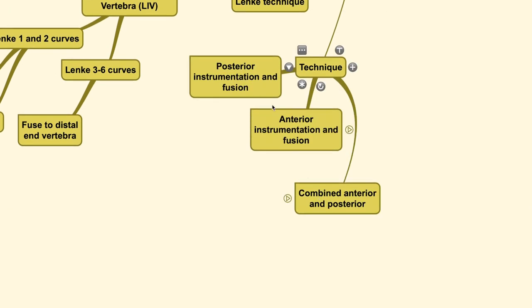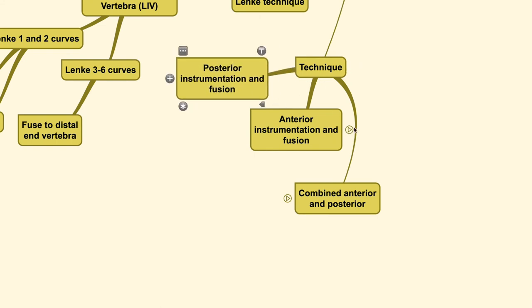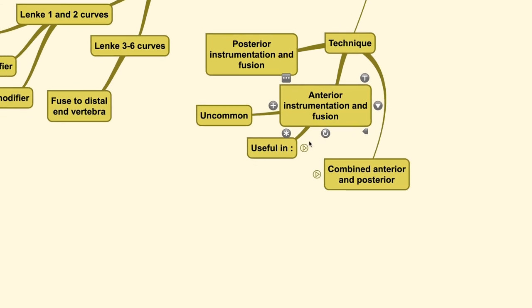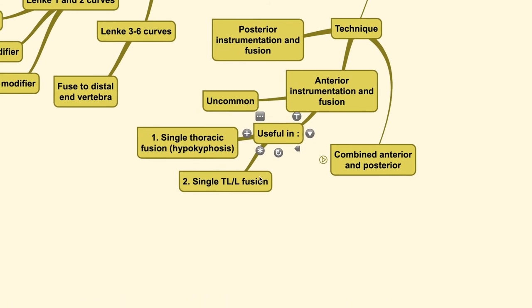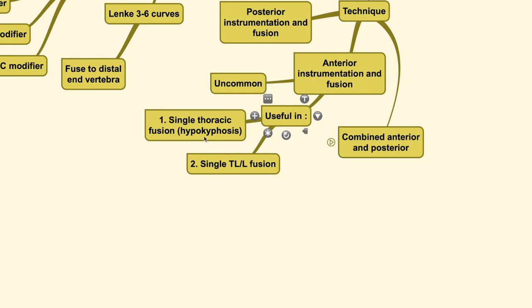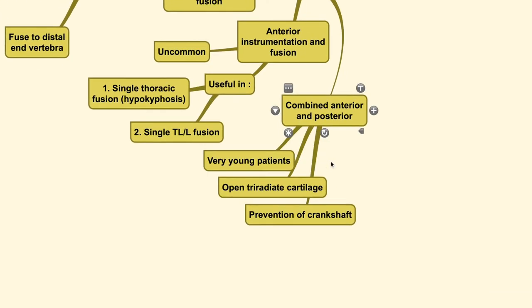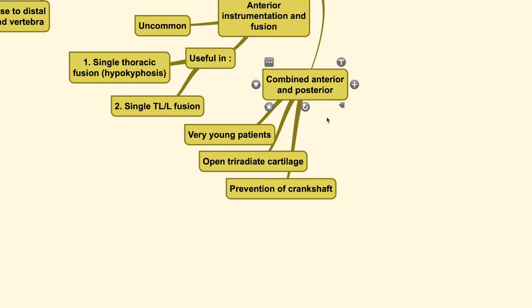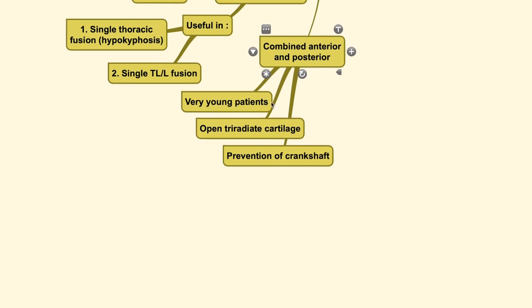For the surgical approach, posterior instrumentation and fusion is the generally preferred technique. Anterior instrumentation or fusion is uncommon but useful for single thoracic fusion in patients with hypokyphosis or for single thoracolumbar-lumbar fusion. A combined anterior and posterior approach is used in very young patients to prevent crankshaft phenomenon — particularly when the triradiate cartilage is still open or the patient is before the peak height velocity.